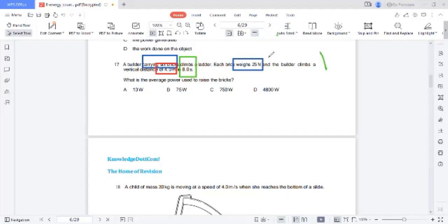The total weight is the weight of one brick times the number of bricks. So 25 times 8 is 200 Newtons. The builder climbs a vertical distance, so height is four meters and time taken is eight seconds.